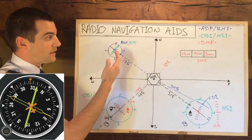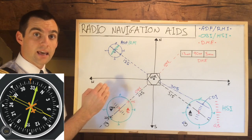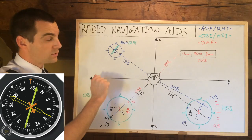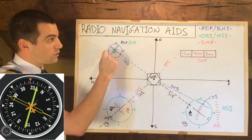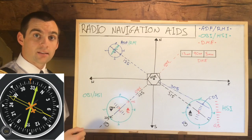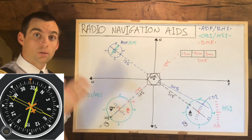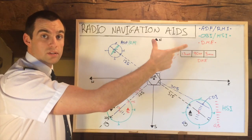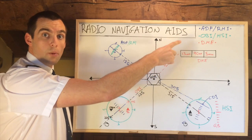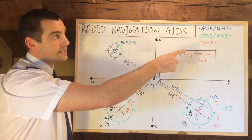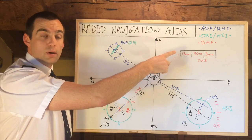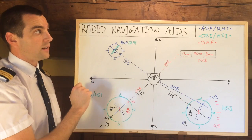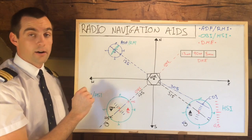As opposed to an ADF, where you tend to only be able to get relative bearings because you can't change the compass card, an RMI will be slaved to always indicate the aircraft heading, or there will be a manual knob where you can twist and select the heading that you're on by having a look at the compass. The next two instruments I've grouped together are the Omni Bearing Indicator and the Horizontal Situation Indicator, which go together similarly like an ADF and an RMI.